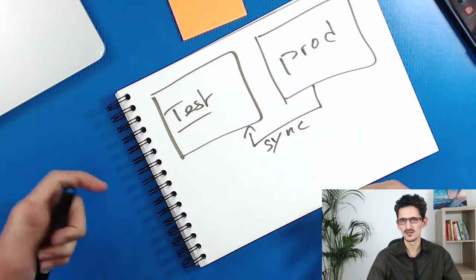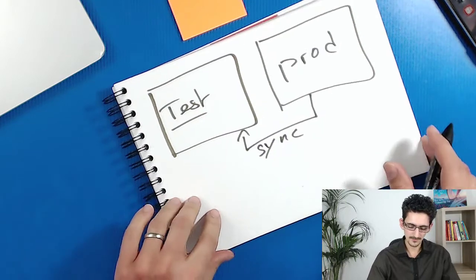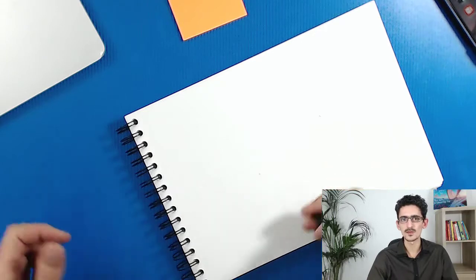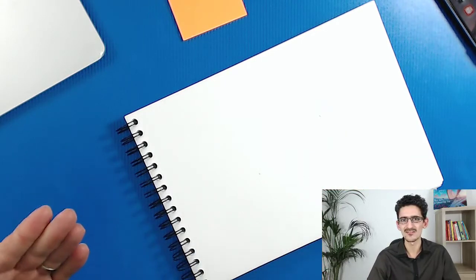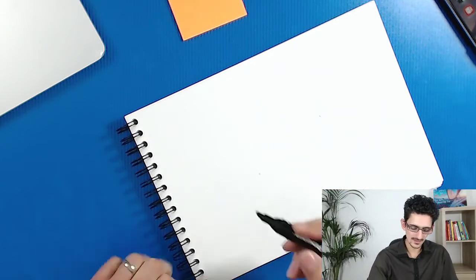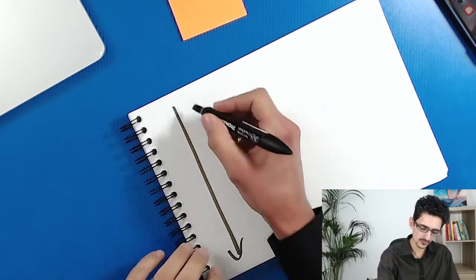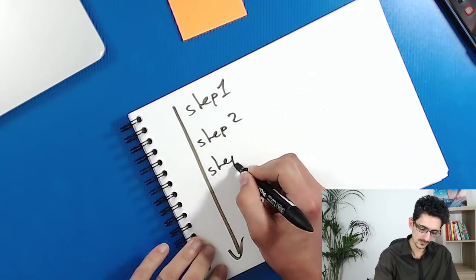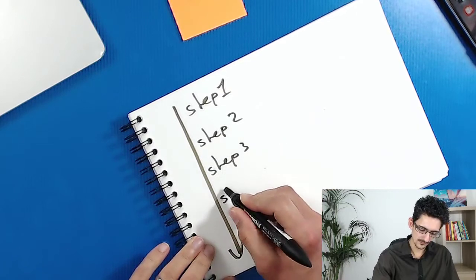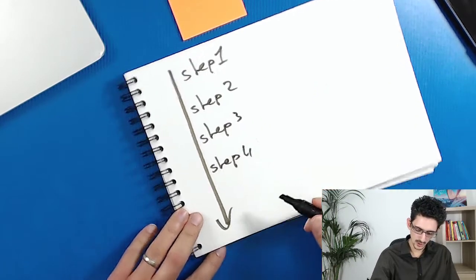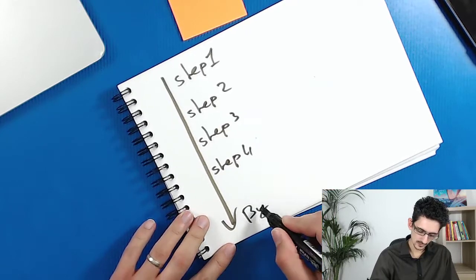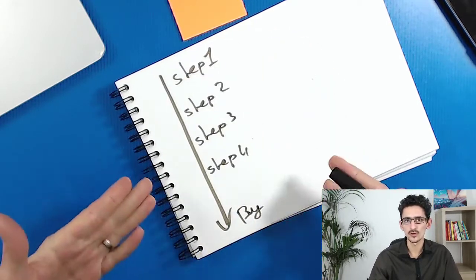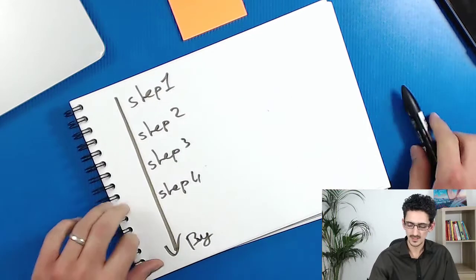You can ask someone else to run the test. Using a software testing company can be expensive, but it's not a very high-value task, so it's quite easy to create a Word document where you describe step one, step two, step three, step four, and so on until someone buys your product — it should cover the entire application that you want to test.